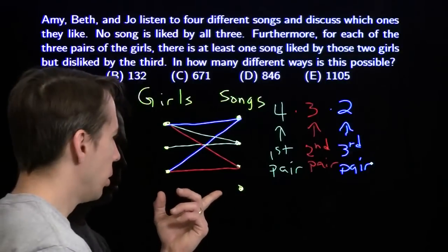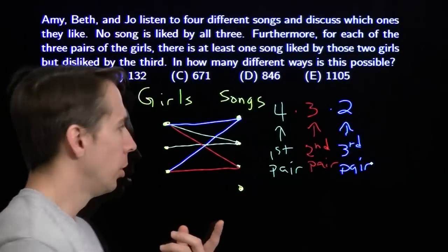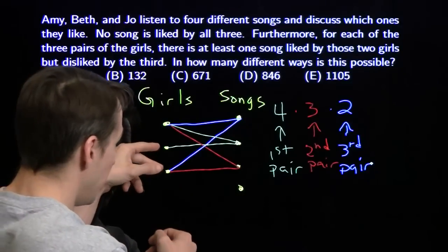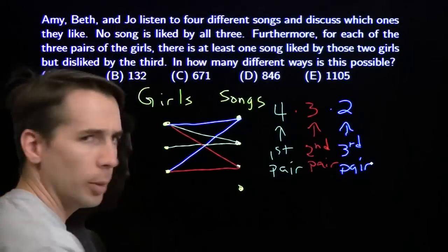This last song can't be liked by all three girls. But it can be liked by these two, or these two, or these two up here. That's three options. It can be liked by each one of these girls individually. That's three more options. Or it could be liked by no girls at all.